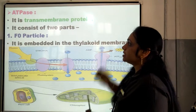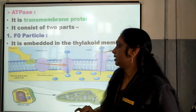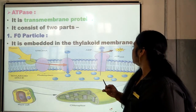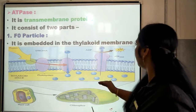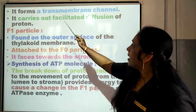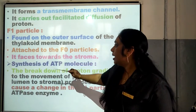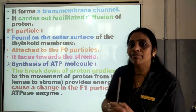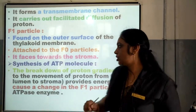Now what is ATPase? It is a transmembrane protein and consists of two parts: F0 particle as well as F1 particle. F0 is embedded in the thylakoid membrane. It forms a transmembrane channel and carries out basically the diffusion of protons. F1 particle projects from the outer surface of the thylakoid membrane and attaches to the F0 particles. So F0 and F1 particles are connected to each other and they are the parts of ATPase enzyme. F1 particle is facing towards the stroma.